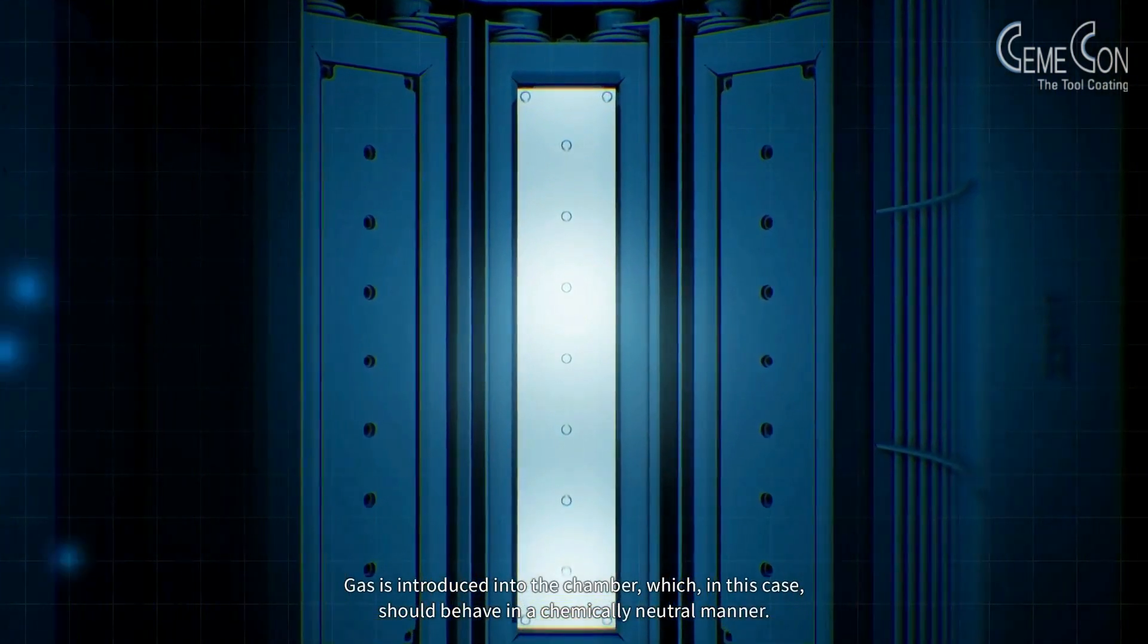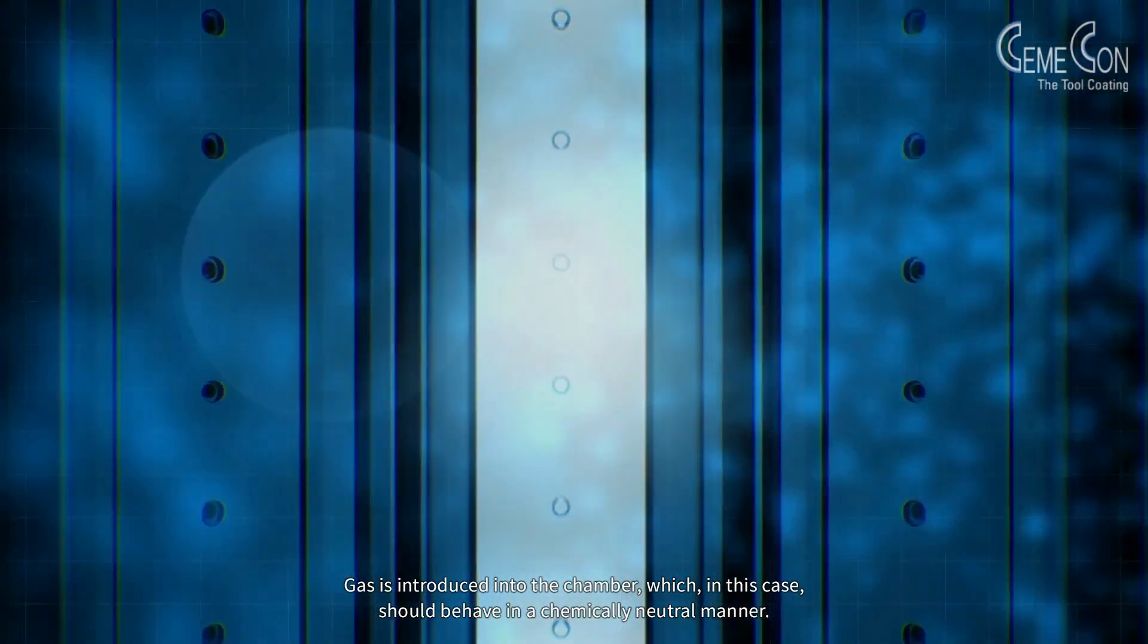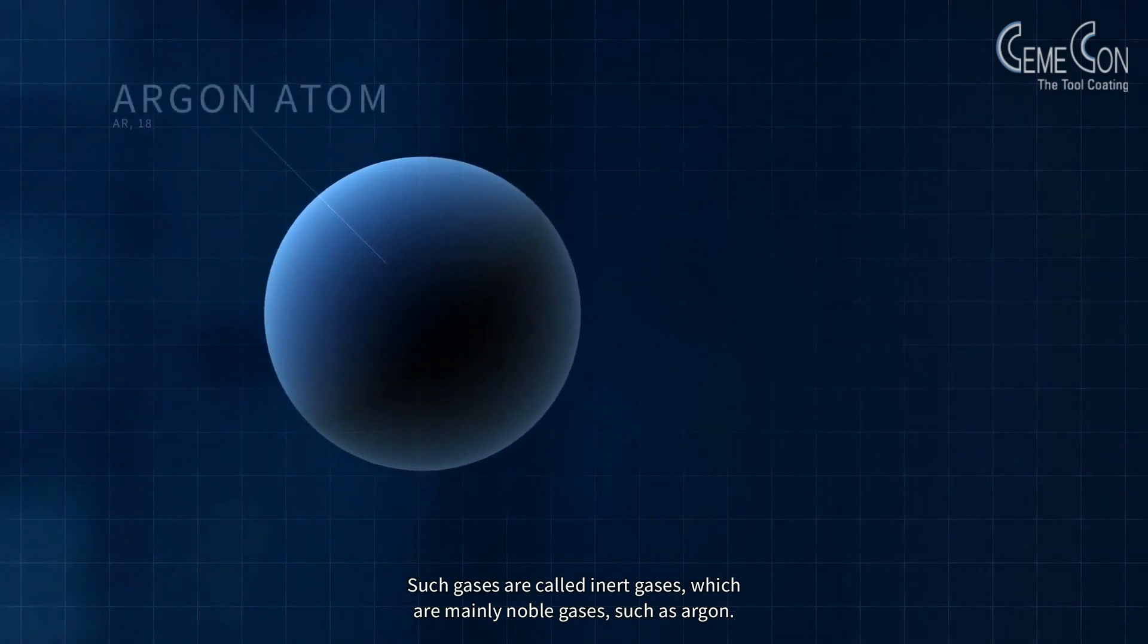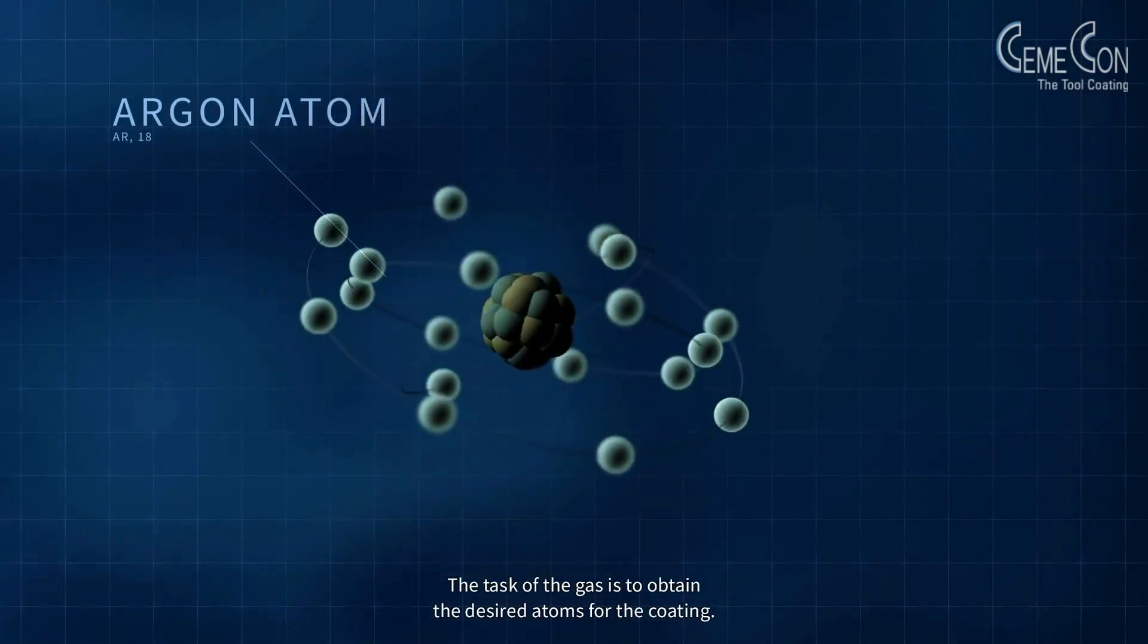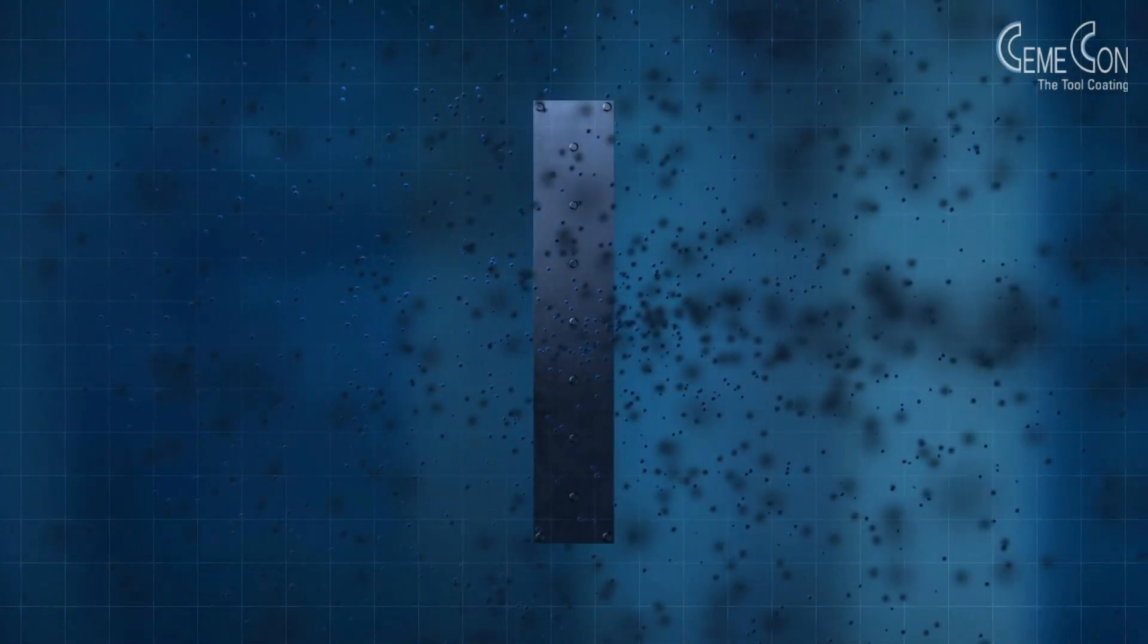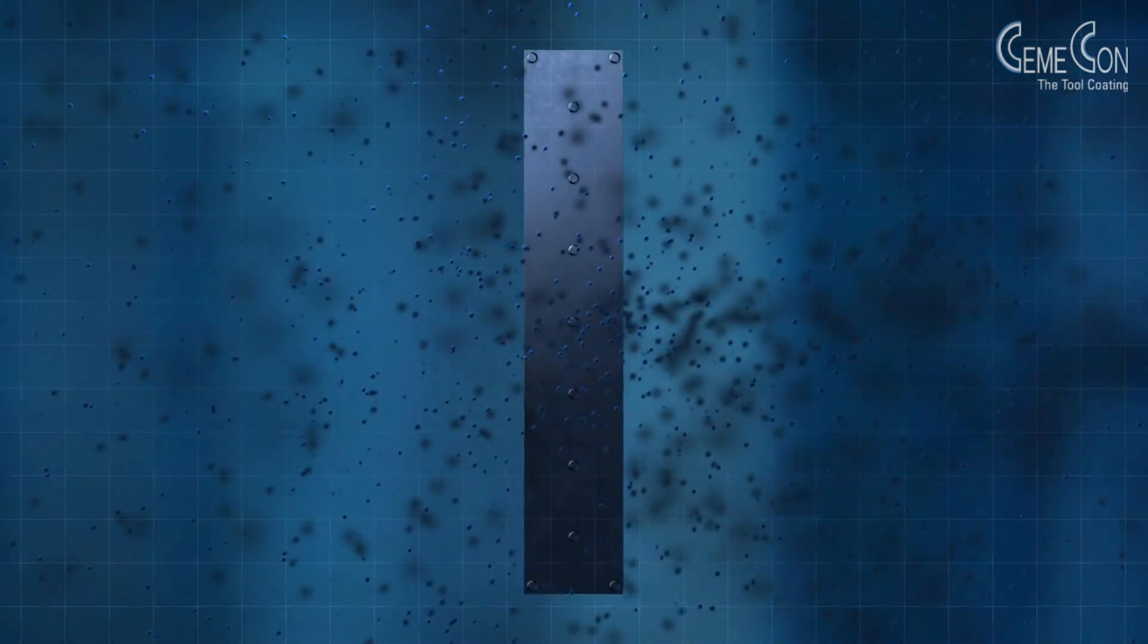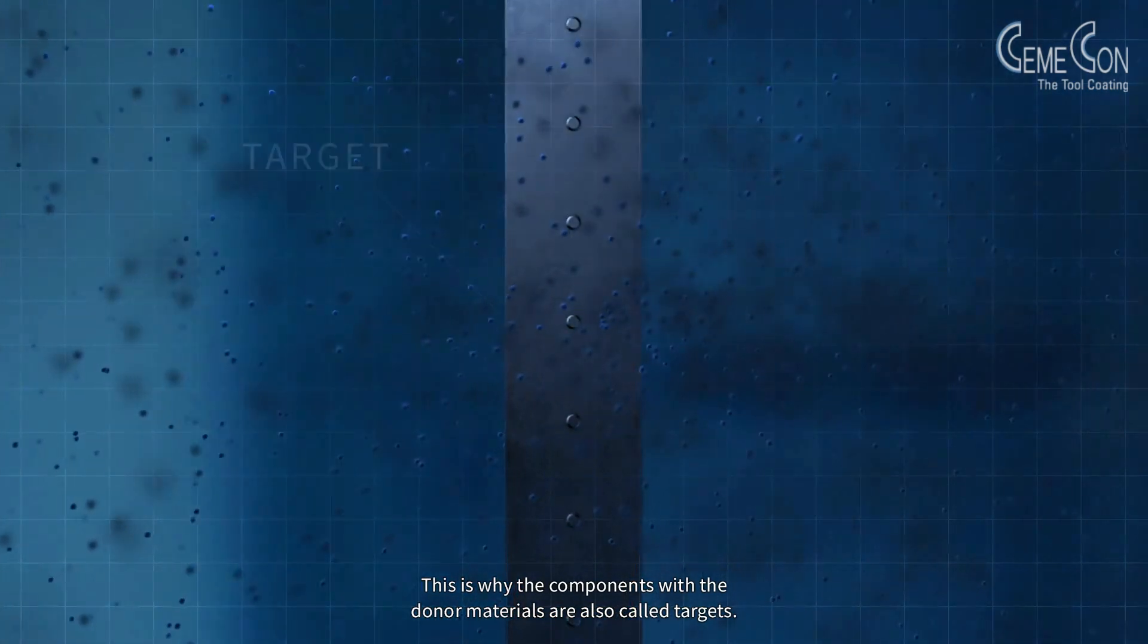Gas is introduced into the chamber which, in this case, should behave in a chemically neutral manner. Such gases are called inert gases which are mainly noble gases such as argon. The task of the gas is to obtain the desired atoms for the coating. Its goal is therefore the donor material. This is why the components with the donor materials are also called targets.